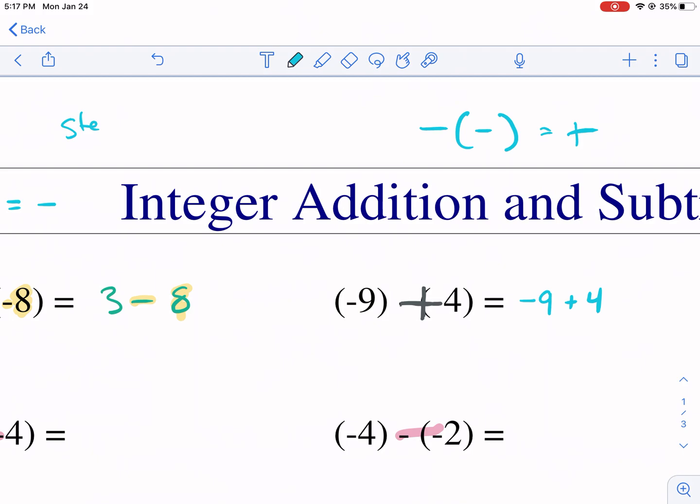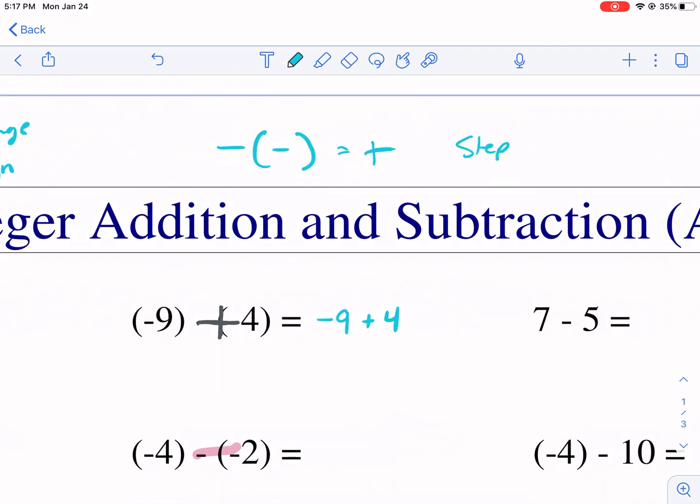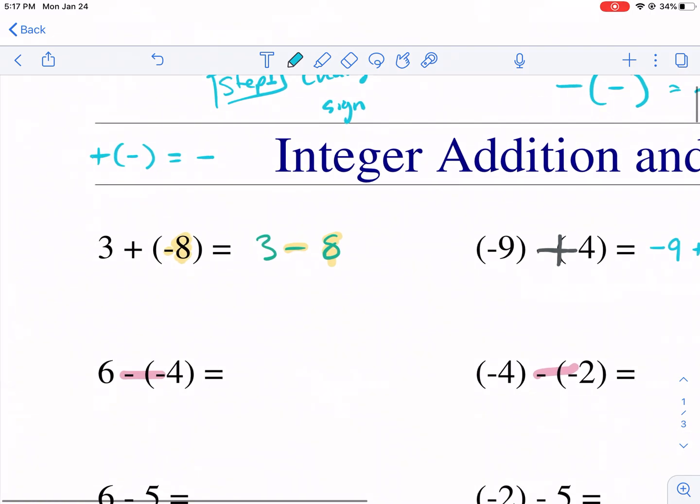So anytime you have minus a negative, you should change this to positive right away before even doing anything. So step one, you want to change the sign first. And then step two, we're just going to do our normal operation. You're just going to add or subtract.